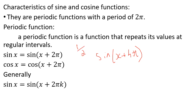For example, sin of x plus 4pi equals the same value as sin x, because 4pi equals 2pi times 2, which is a multiple of the period. So the value remains the same.